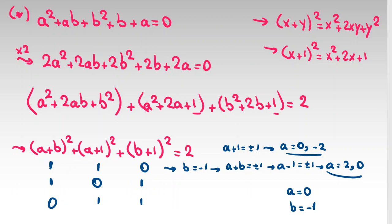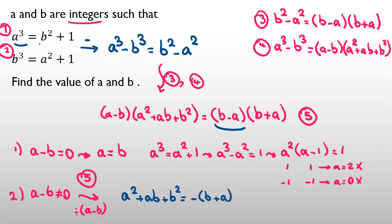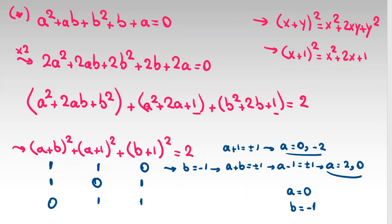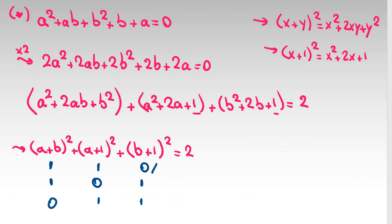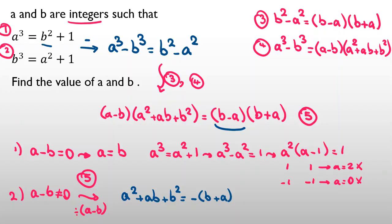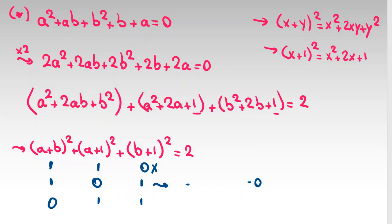Checking A equals 0, B equals negative one: left-hand side A cubed equals 0, but right-hand side B squared plus 1 equals 1 plus 1 equals 2. This is a contradiction, so this sub-case is impossible. For the next sub-case where A plus 1 squared equals zero, A equals negative one, which similarly leads to B equals 0. Checking A equals negative one, B equals zero: left-hand side gives negative one, right-hand side gives one. Contradiction again — impossible.